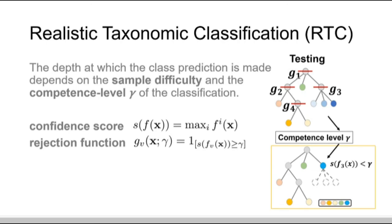Taking this figure for example, the competence score of the classifier at N3 is less than gamma, so its children are rejected.